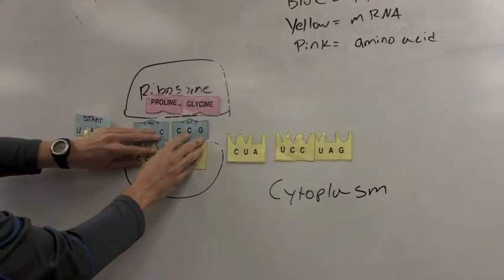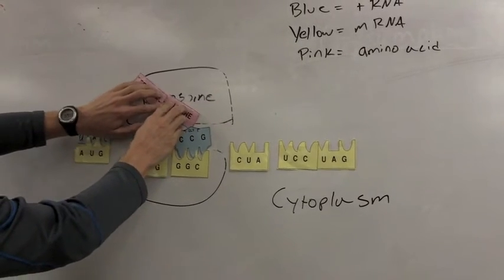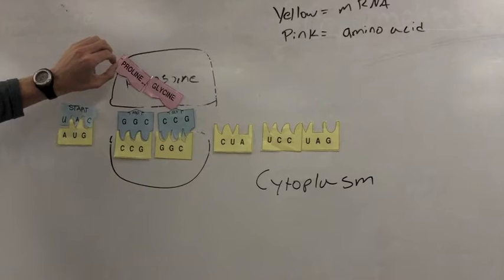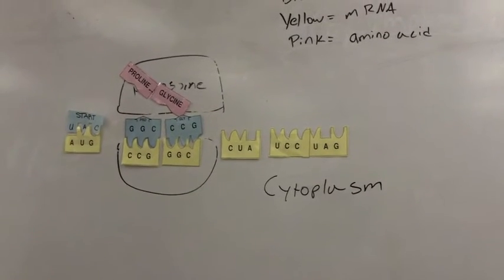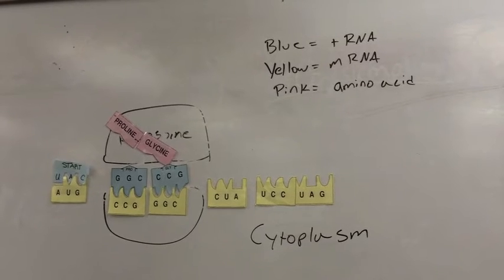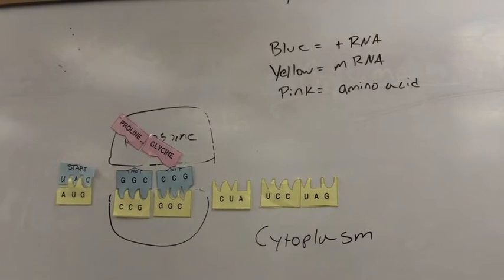But the amino acids actually are connected together, and they start to shift outside of the ribosome. So we're going to see these amino acids bonded together, connecting together, and they're going to form this long chain of amino acids that once put together and folded actually make the protein.